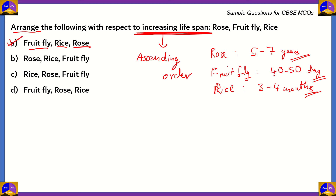Therefore, option A is the correct option. If we look at B, C, and D — B starts with rose, but rose has the highest lifespan so it's incorrect. Option C says rice first, but rice lives for only three to four months, which is incorrect for the lowest position. In option D, rose is in the middle and rice has a higher lifespan, but rice only lasts three to four months while a rose lasts five to seven years. So option D is also incorrect. The correct answer is option A: fruit fly, rice, and rose.